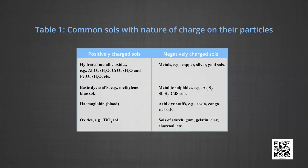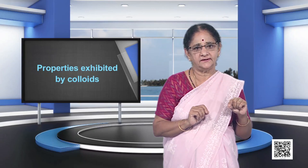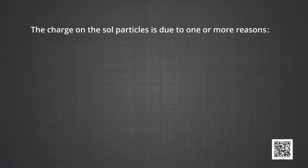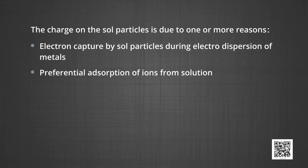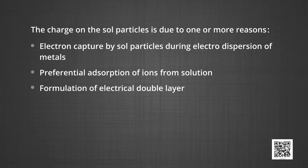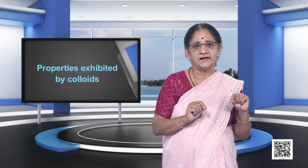A list of common sols with the nature of the charge on each particle is given in the table. Hydrated metallic oxides, basic dyes, hemoglobin, and oxides of metals carry positive charge. Metals, metallic sulphides, acid dyes, and sols of starch, gelatin, etc. carry negative charge. The charge on sol particles is due to one or more reasons: electron capture by sol particles during electrodispersion of metals, preferential adsorption of ions from solution, and formation of an electrical double layer. Amongst these three, preferential adsorption of ions is the most accepted reason. Dissolved particles acquire positive or negative charge by preferential adsorption of positive or negative ions, and usually preferential adsorption of the ion common to the colloidal particle takes place.